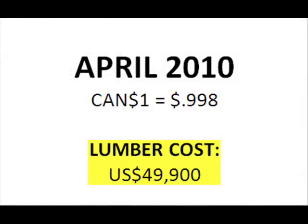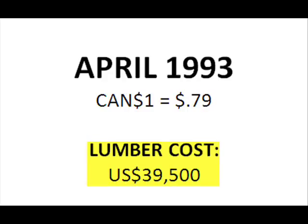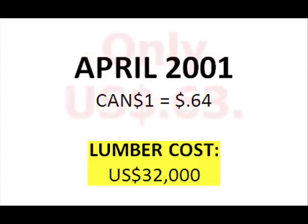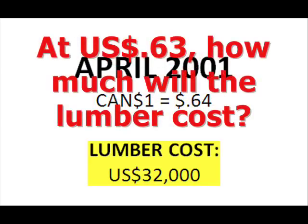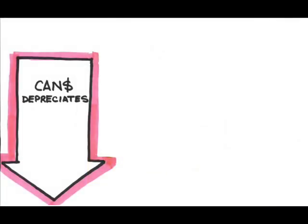Now let's take a trip back in time and figure out how much that same 50,000 Canadian dollars worth of lumber would have cost in April of each year for the previous 20 years. When the foreign currency is cheapest — in this case 2001, at 64 cents per Canadian dollar — the foreign imports are the cheapest, at $32,000 US dollars. Even if the Canadian lumber mill charges the same 50,000 Canadian dollars every year, the price to the US importer changes as the exchange rate changes. When the Canadian dollar depreciates, the lumber is cheaper and US importers will buy more lumber.